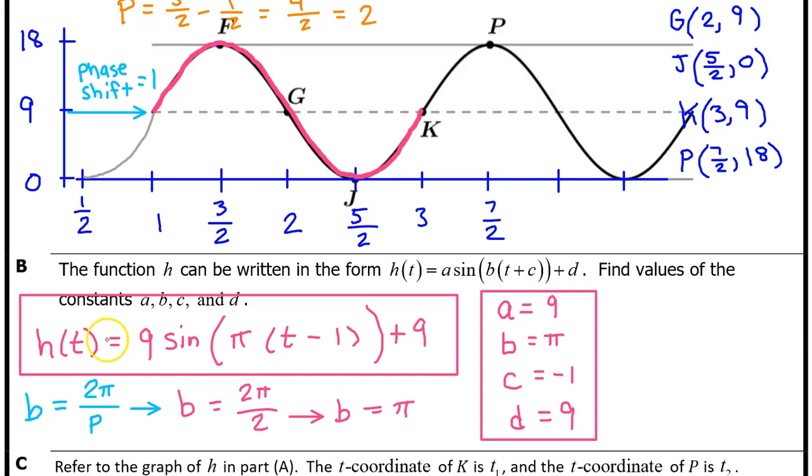On the AP exam, you can either record your answer as a function h of t with the values of a, b, c, and d filled in, or you can record your values of a, b, c, and d separately in an answer box like this.